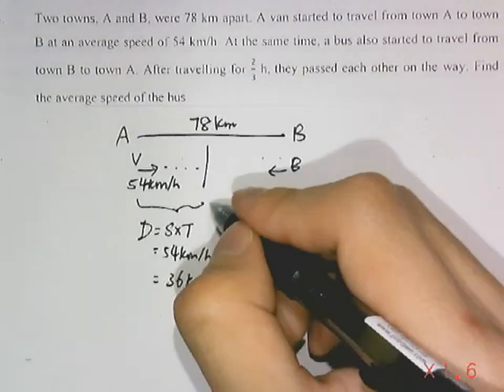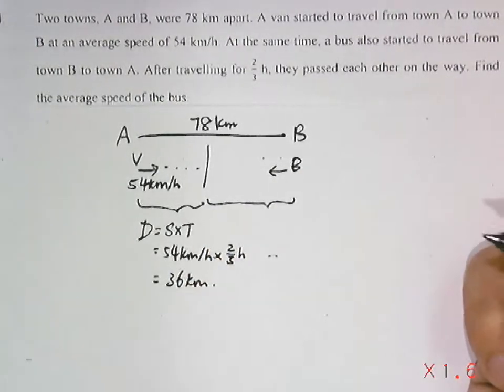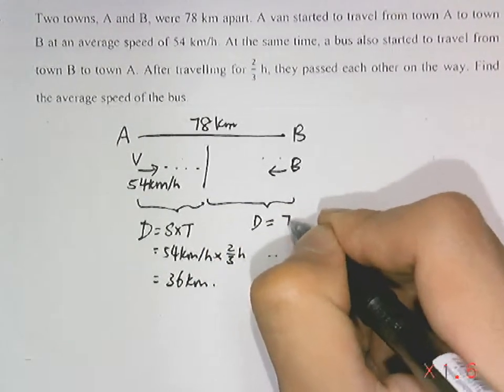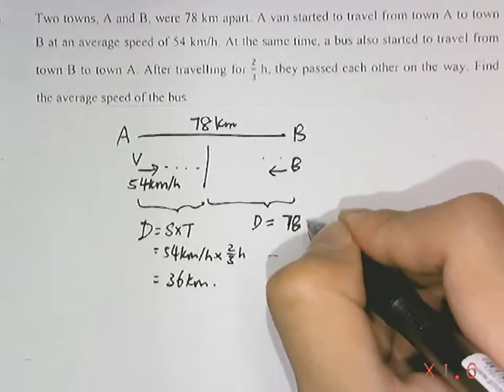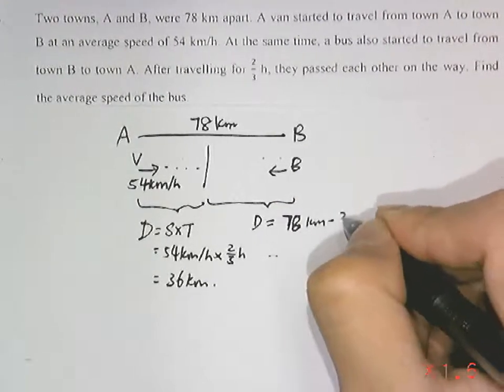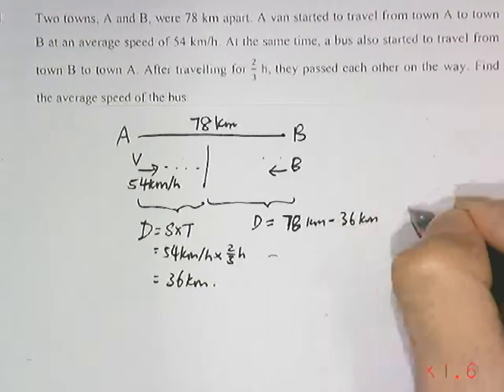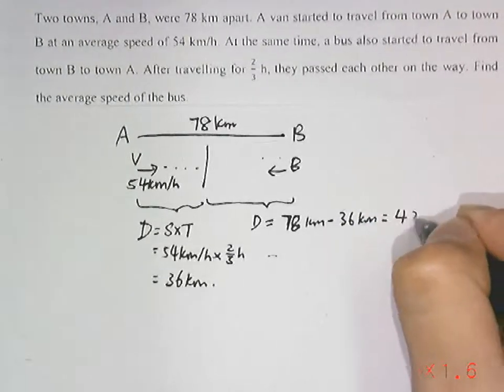From here we can find the other side, which is the distance. So, 78km minus 36km gives us 42km.